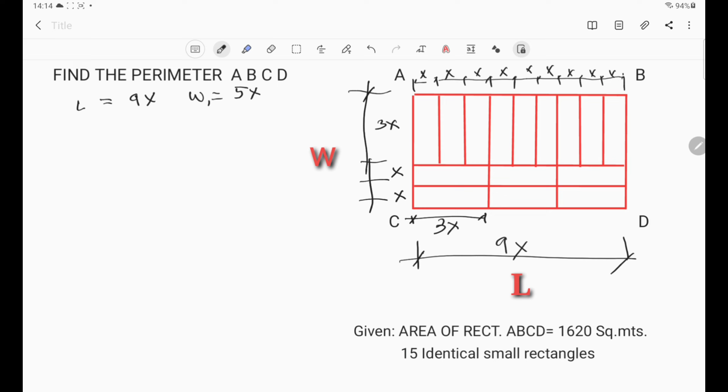Now, we can solve the value of x by using the area of the rectangle. Length times width is equal to the area. So nine x times five x is equal to 1620 square meters.